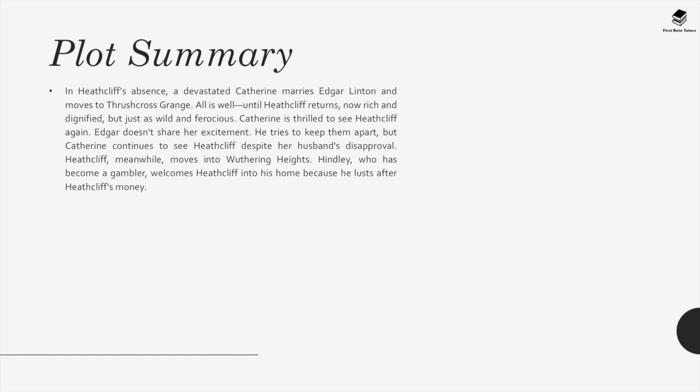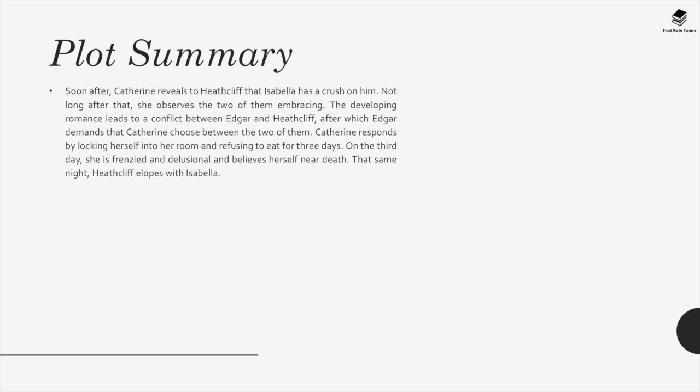Catherine reveals to Heathcliff that Isabella has a crush on him, and not long after she observes the two of them embracing. The developing romance leads to a conflict between Edgar and Heathcliff, after which Edgar demands that Catherine choose between them. Catherine responds by locking herself in her room and refusing to eat for three days. On the third day she is frenzied and delusional and believes herself near death. That same night, Heathcliff elopes with Isabella.